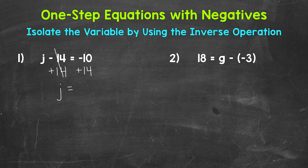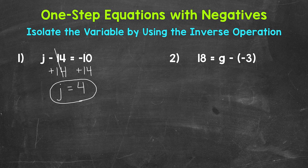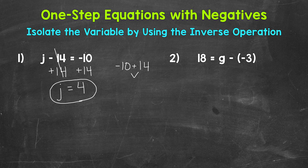So we have j equals — on the right side we have negative 10 plus 14. We are starting at negative 10 and increasing in value by 14, so we end up with positive 4. j equals 4. We always have the option to come to the side to set up a problem differently — for example, negative 10 plus 14 solved vertically, or rewritten horizontally off to the side. Negative 10 plus 14 equals 4.